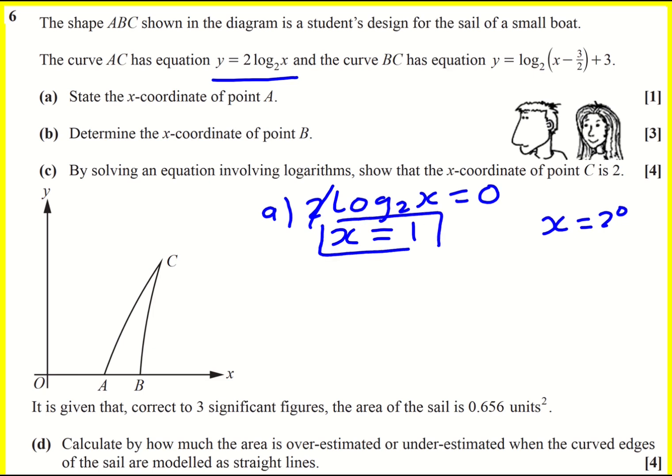In part B, we're asked for the x-coordinate of point B, so that's part of BC. We need to do exactly the same thing. This time it's log base 2 of (x - 3/2) + 3 equaling 0. I can rearrange that to minus 3, and then I'm going to put this in exponential form. So log base 2 of (x - 3/2) equals -3.